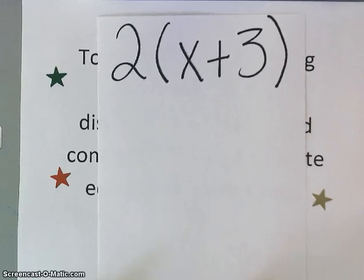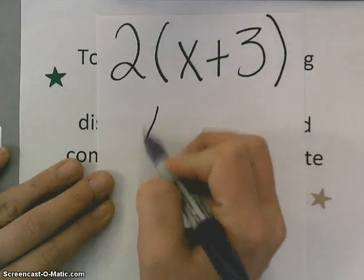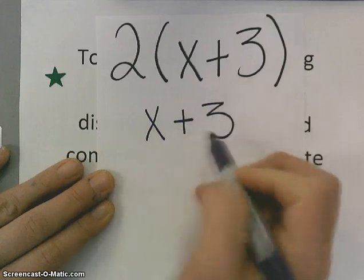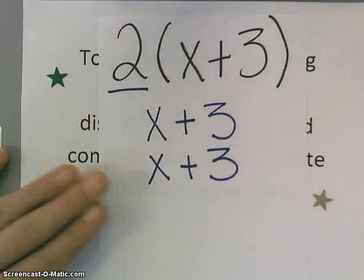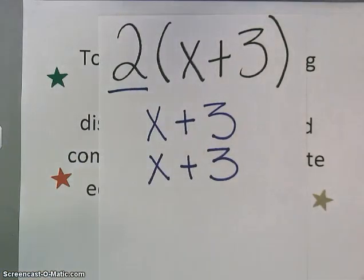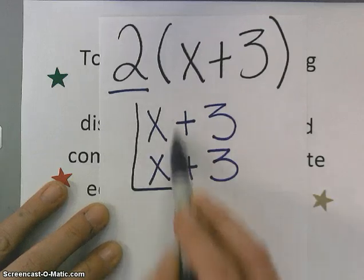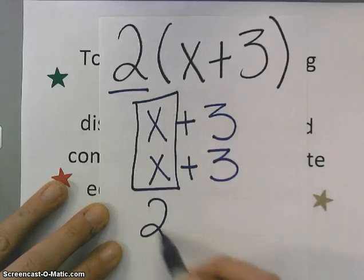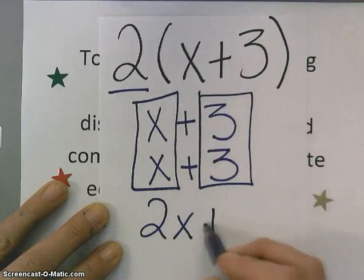We took 2 times the quantity x plus 3, and we broke that down into x plus 3 and x plus 3, because this says I have 2 of those quantities. Then we combined our like terms. So I have x and x, which would give me 2x's, and 3 and 3, which would give me a positive 6.